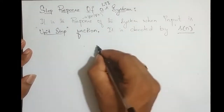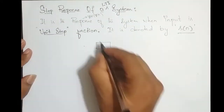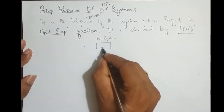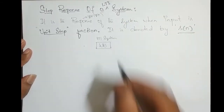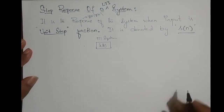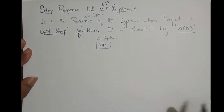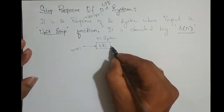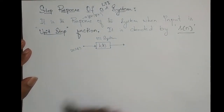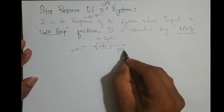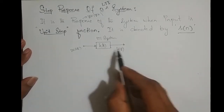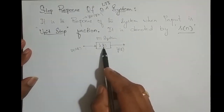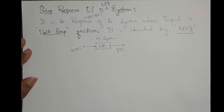Consider we have a continuous time LTI system with an impulse response h(t). The input to the system is x(t) and the output is y(t). For an LTI system, y(t) is nothing but the convolution of the input signal x(t) with the impulse response h(t).